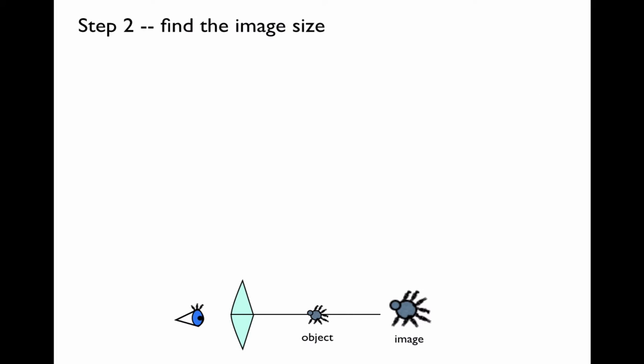Step 2 will be to find the image size. This is simply equal to the magnification times the size of the object, or the height of the image equals the magnification times the height of the object. The spider was stated to be 4 millimeters wide. So this gives us 14 millimeters as the size of the image.